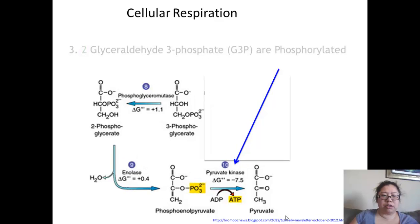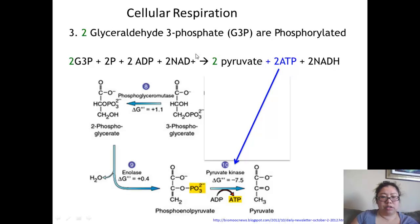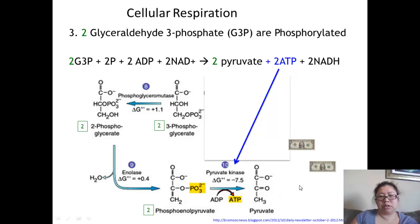The third step of glycolysis is when the two 3-phosphoglycerate molecules are further processed. They become phosphoenolpyruvate, and each produces an ATP. Since there are two of them, you go through this step twice: 2-phosphoglycerate converts to phosphoenolpyruvate, producing an ATP, and then becomes pyruvate. In this process, you get out two more ATPs.